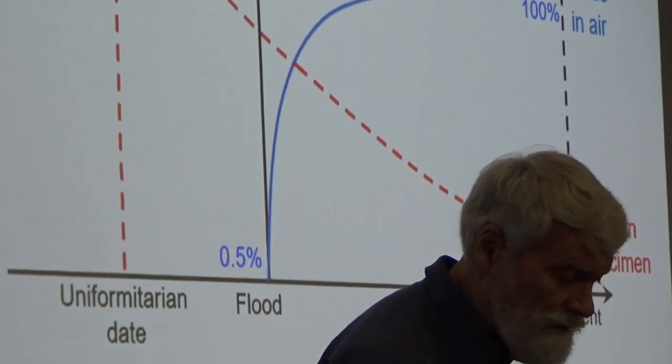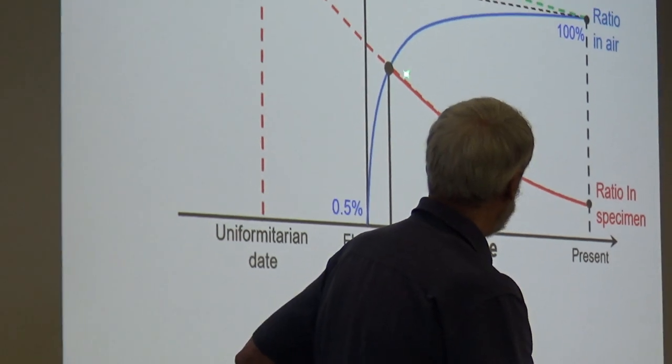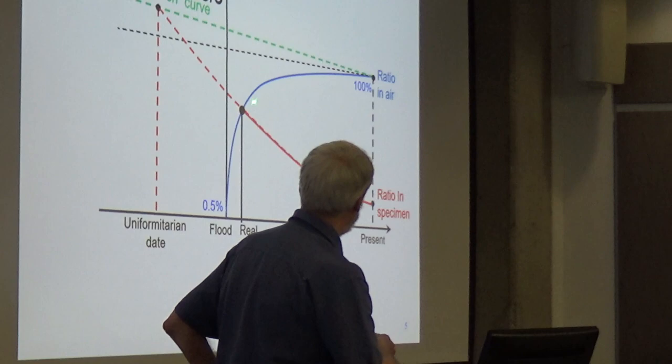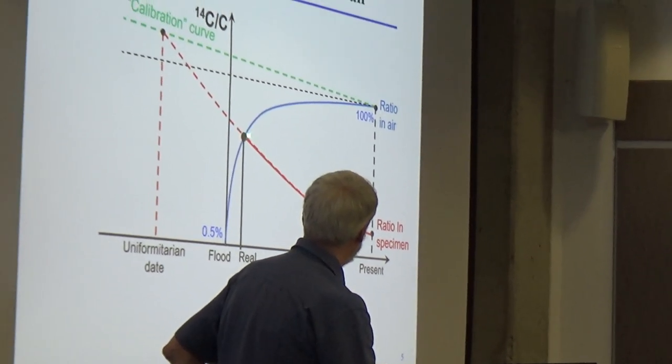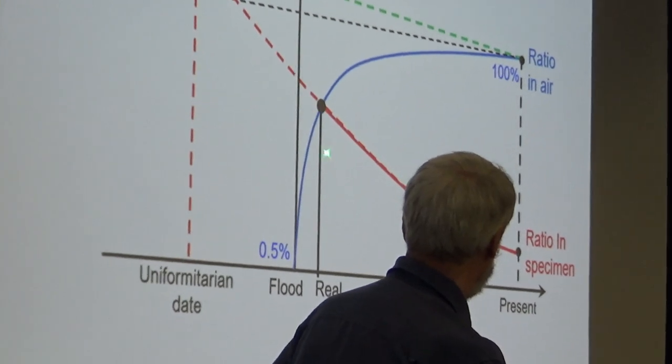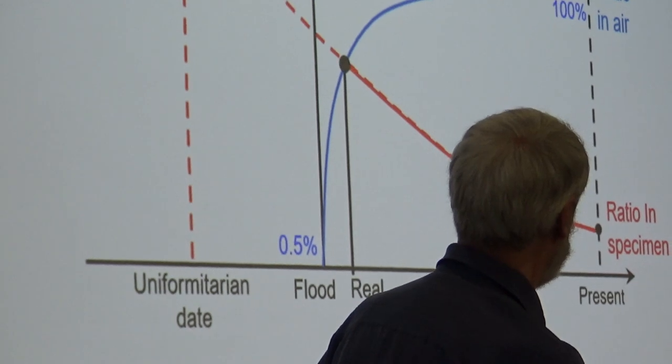So now, that's how we date it. So if we take account of that curve, then we take account of where the initial amount was lower. So the real date is, you know, a few hundred years after the flood in this case.